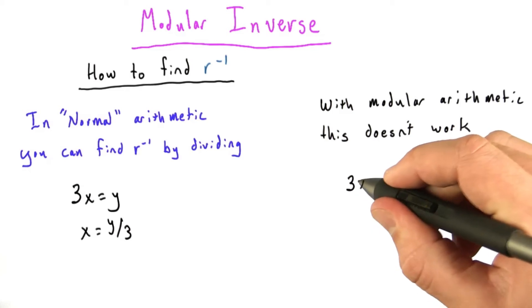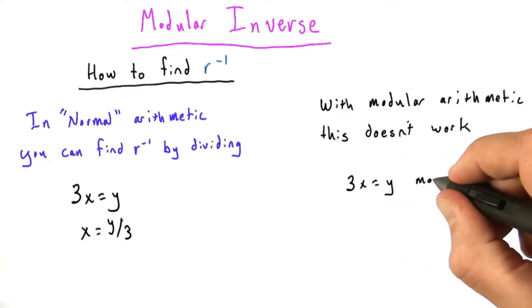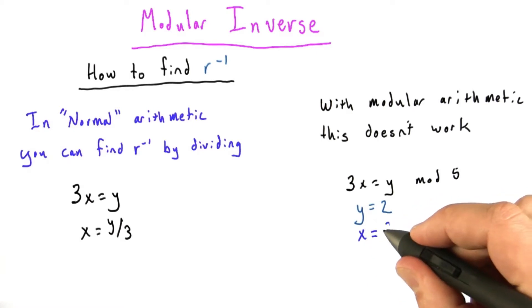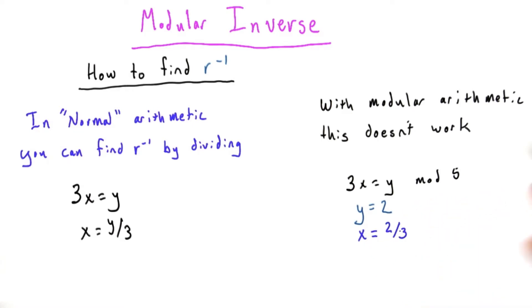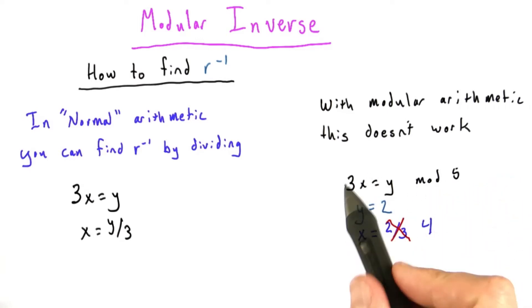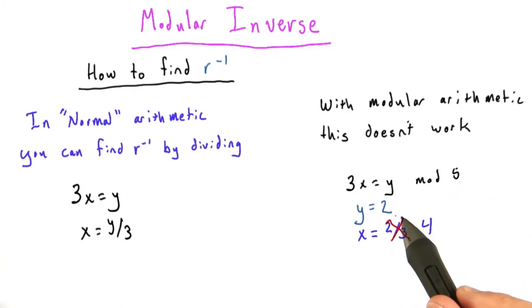Taking our same example, 3x equals y mod 5, and set y equals 2. If we just divide, we get x equals 2 thirds, which doesn't make sense. X has to be an integer. It turns out the answer is actually 4, because 3 times 4 is 12, and 12 mod 5 is 2.